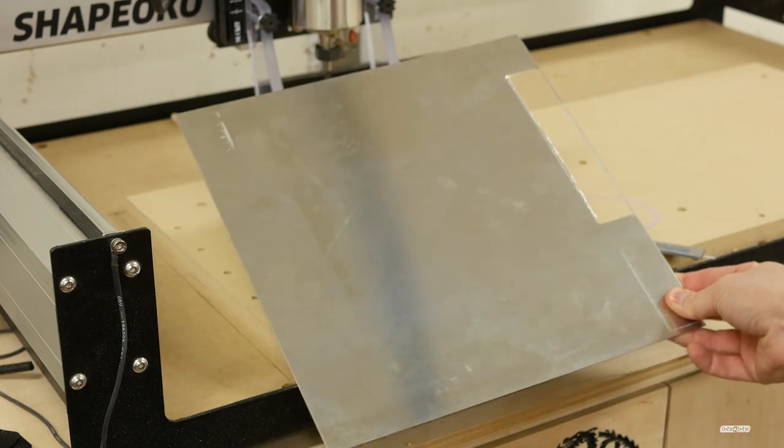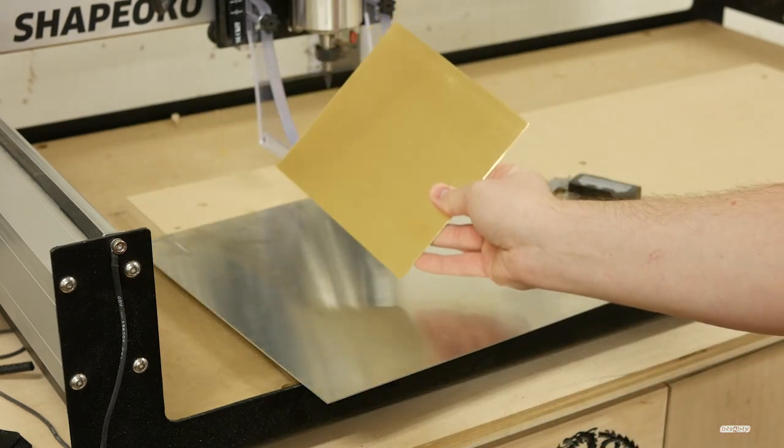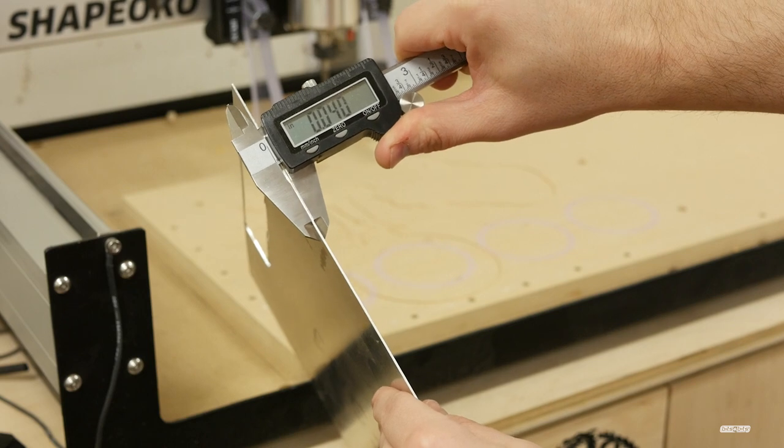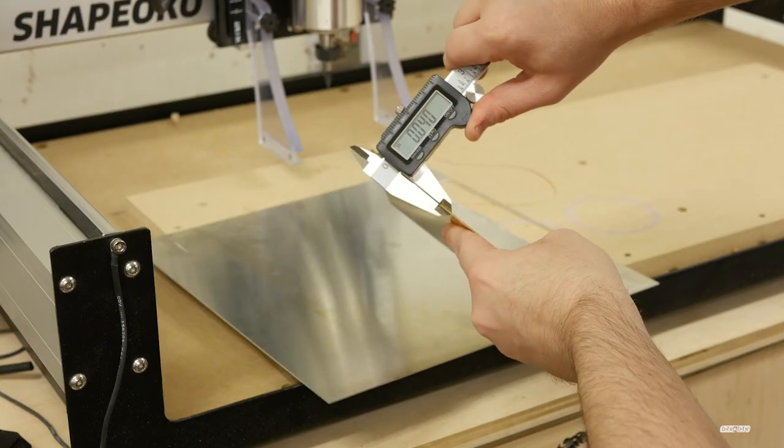Today we're going to make a couple of 6-inch rulers on this CNC machine, one out of brass and the other one out of aluminum. Both sheets are 18 gauge or 040 thickness.